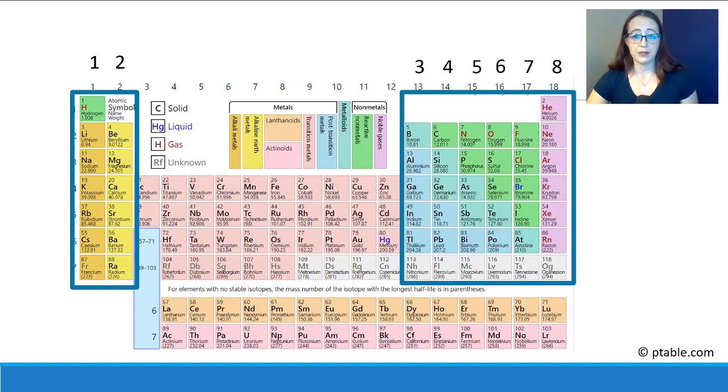So let's look at some examples. For carbon, we can count from the left and move 1, 2, 3, 4. So for carbon, there is 1, 2, 3, 4 valence electrons.